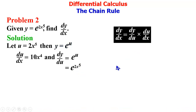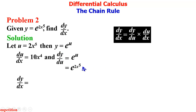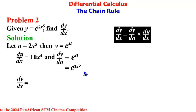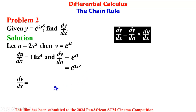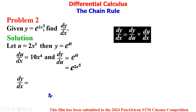We substitute into the chain rule: dy/dx = dy/du × du/dx. Our dy/du is e^(2x⁵).